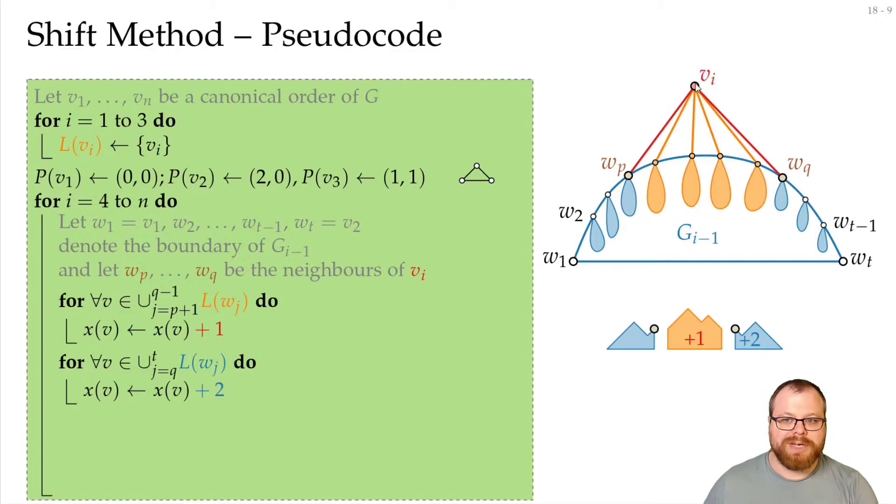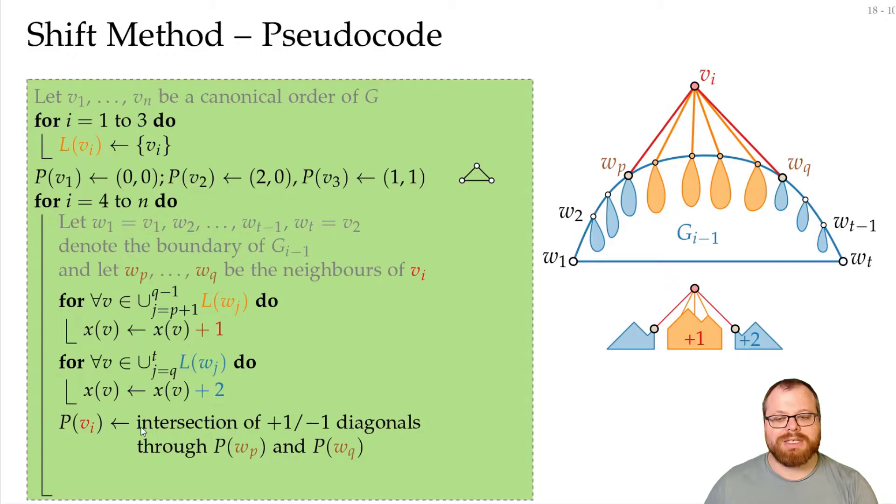Now we have to place V_i. And for that we find the intersection of the +1, -1 diagonals through these two points. And we already proven that this gives us a planar drawing.